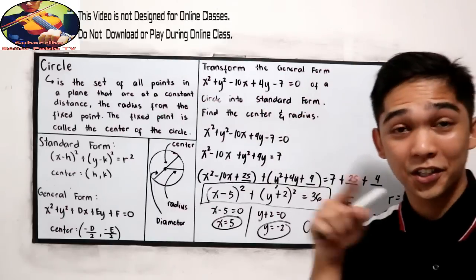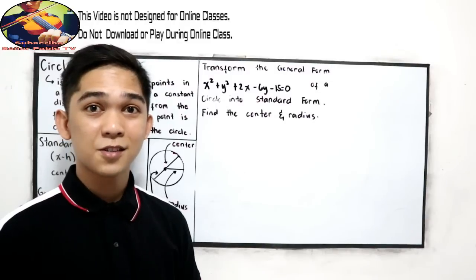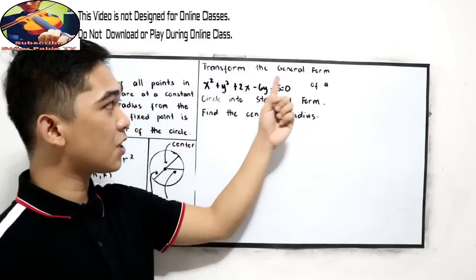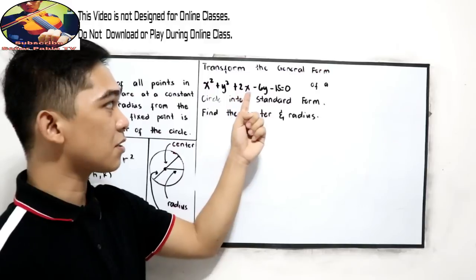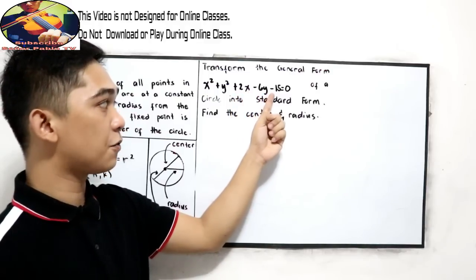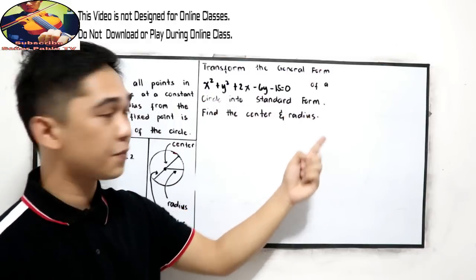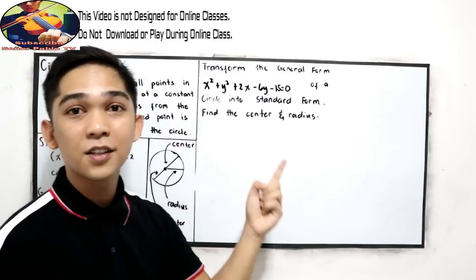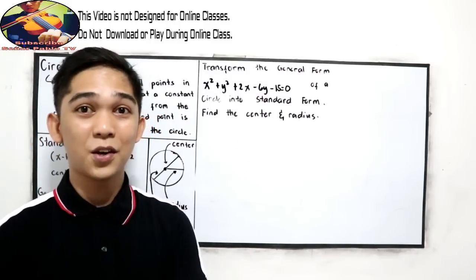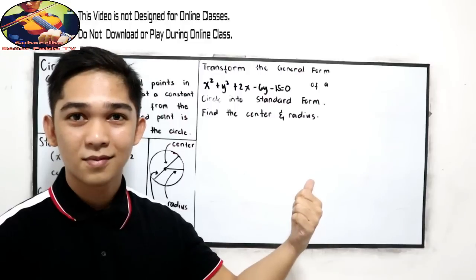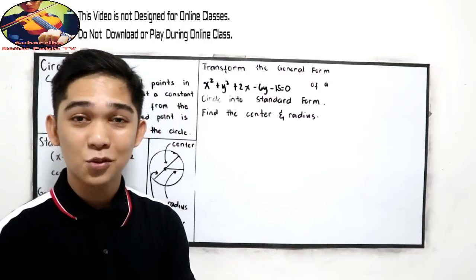Now it's your turn. Transform the general form x squared plus y squared plus 2x minus 6y minus 15 equals 0 of a circle into standard form. Find the center and the radius. Pause the video and answer this problem, then resume watching to check your answers.